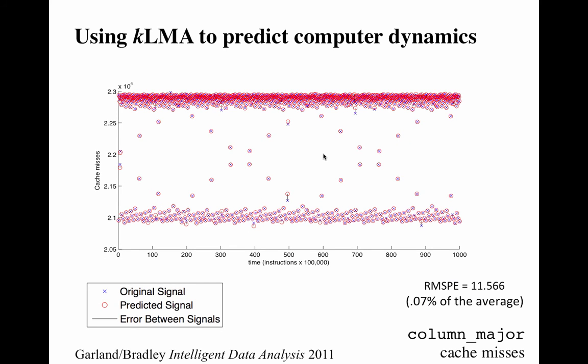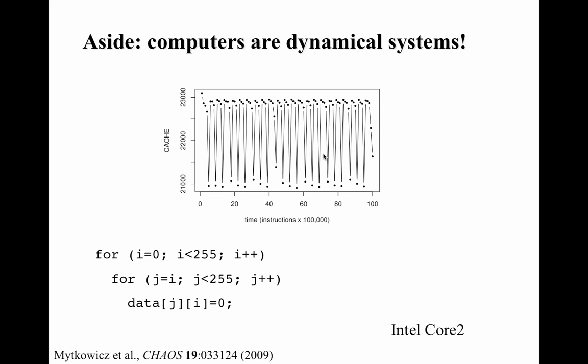Here's one example structured like the Santa Fe Institute competition: we built the model from the first 90% of the data, used it to predict the next 10%, and compared against the true continuation. The results are pretty good. What we were predicting is actually the cache miss rate of an Intel Core 2-based machine as it runs a particular program that repeatedly initializes a matrix in column-major order. Look closely at that trace — it's almost periodic, but not completely. At this point, that should pick your ears up: an almost pattern that doesn't quite repeat should smell like chaos. So we use computers to study dynamical systems, but computers themselves are dynamical systems, and their dynamics are often chaotic.